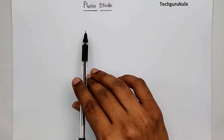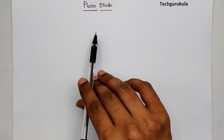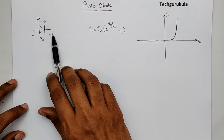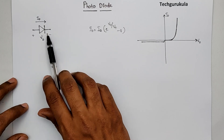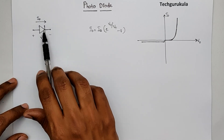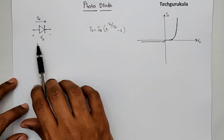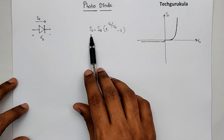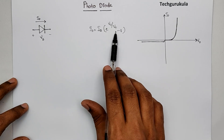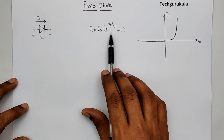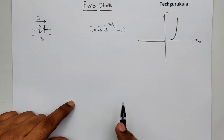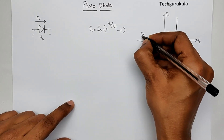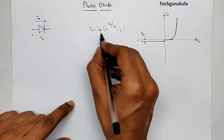To start with, let me take a normal P-N junction diode, its current equation, and its I-V characteristics as reference. I have taken a normal P-N junction diode circuit symbol, where I've shown the reference current direction and the reference potential across the diode, VD. The current equation is ID = I0 times (e^(VD/VT) - 1). In the characteristics, the current value I0 is the reverse saturation current.